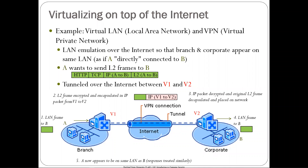This gets to the idea that the hourglass model — application, transport, network, data link layer — is just one way to construct the Russian doll. You can embed that entire stack into another data link layer, into another IP packet layer. These embeddings can be arbitrary, and that's how you build virtualization on top of the internet — treating the internet as another virtual layer and building on top of that layer.